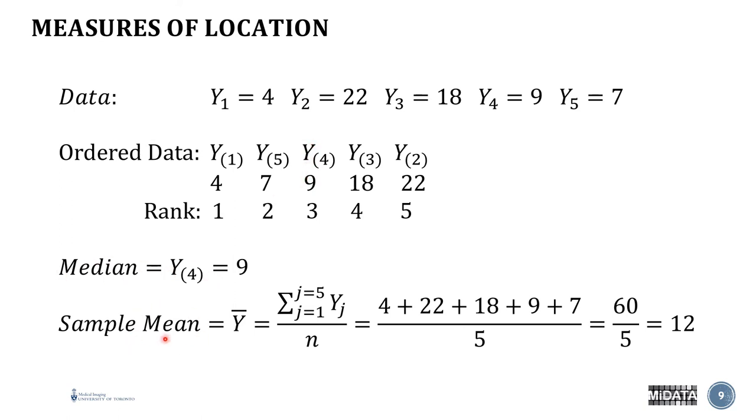We could also calculate the sample mean, which as you know, is just the sum of the values divided by the number of values in the data set. In this case, it's equal to 12. And so when the median and the mean are not equal, this is an indication that your data is not distributed normally. There is another measure of location, which is called the mode, and this one is not used very frequently, and it just represents that value in your data set that has the highest frequency.